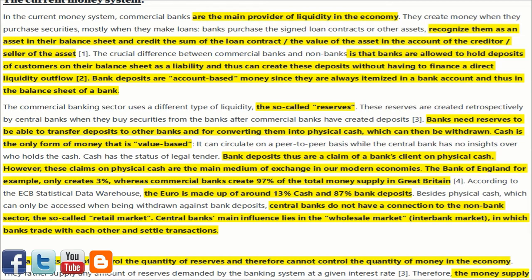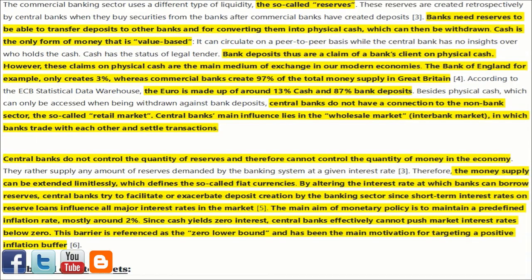Bank deposits are money since they are always itemized in a bank account and thus in the balance sheet of a bank. The commercial banking sector uses a different type of liquidity — the so-called reserves. These reserves are created retrospectively by central banks when they buy securities from the banks after commercial banks have created deposits. Banks need reserves to be able to transfer deposits to other banks and for converting them into physical cash, which can then be withdrawn. Cash is the only form of money that is value-based and can circulate on a peer-to-peer basis while the central bank has no insights over who holds the cash.